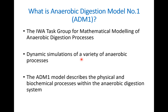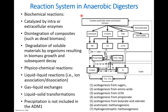The ADM1 model describes the physical and biochemical processes within anaerobic digestion. If we look at the reaction system, we can find biochemical reactions and also physical-chemical reactions. You are actually familiar with this schematic — anaerobic digestion is a process to convert complex material into components like carbohydrates, proteins, and fats. Through hydrolysis, these components can be converted to monosaccharides and fatty acids, including longer-chain fatty acids.